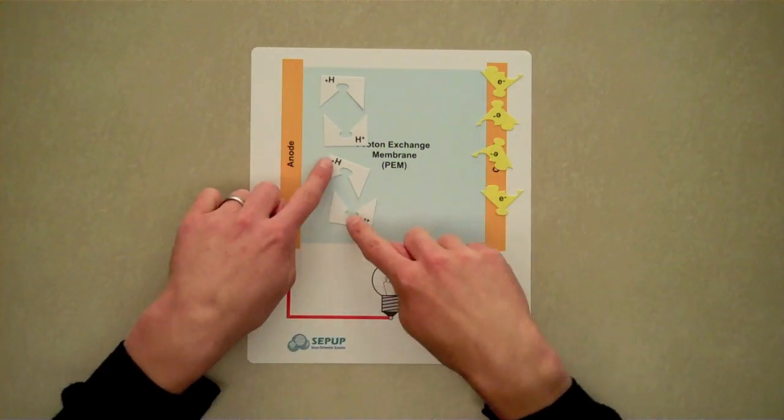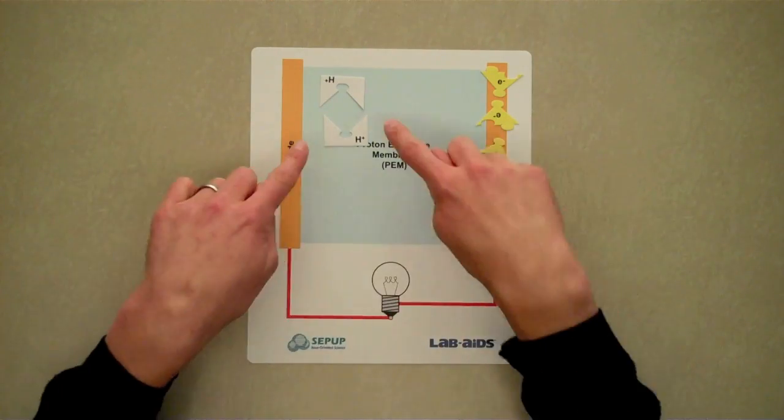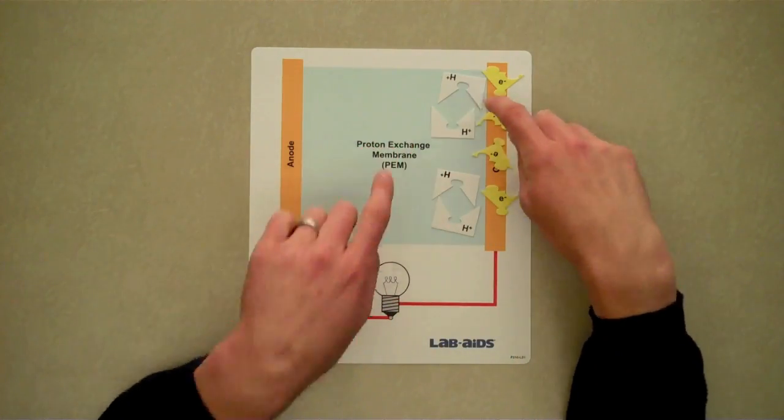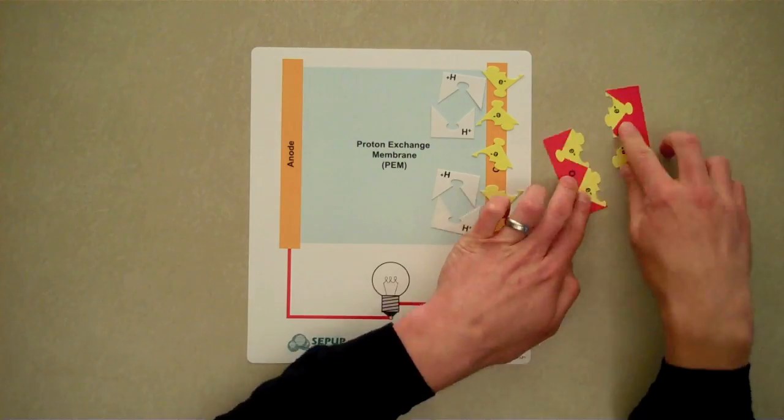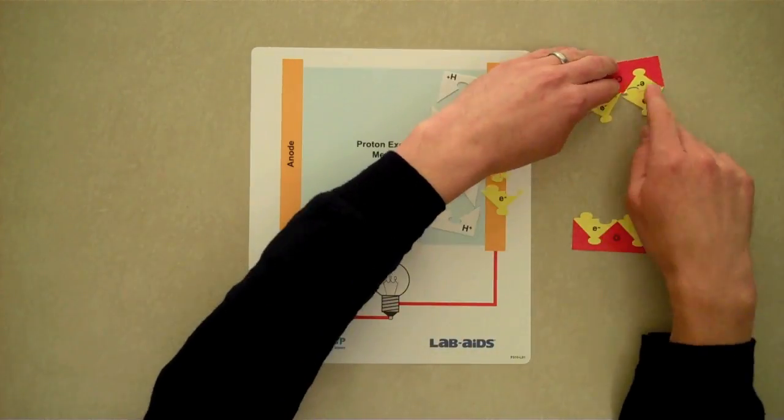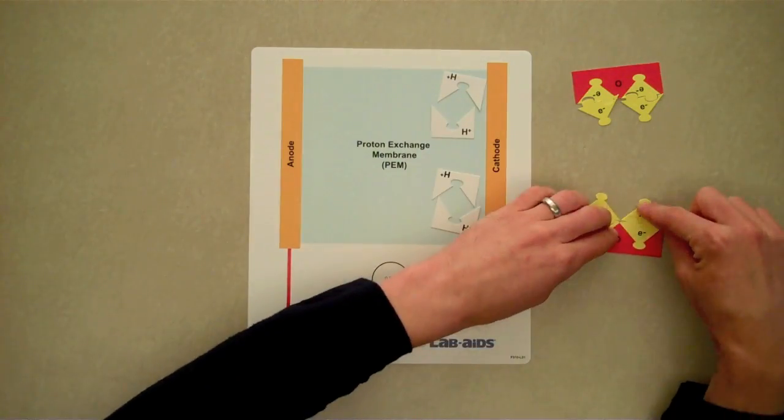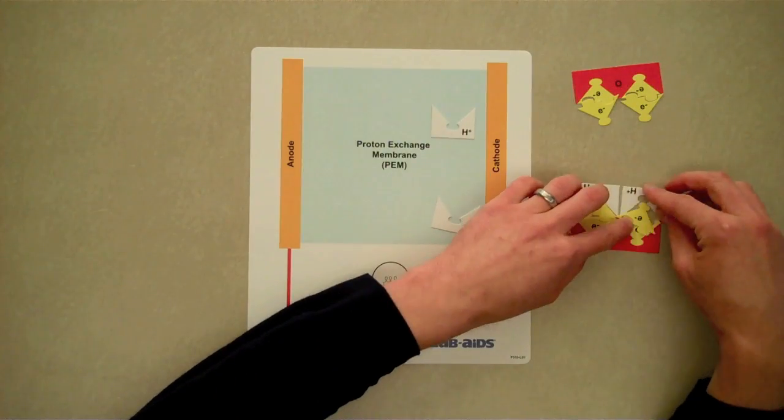The protons, represented by the white pieces, travel through the proton exchange membrane. The protons, electrons, and oxygen molecules recombine at the cathode to form water molecules.